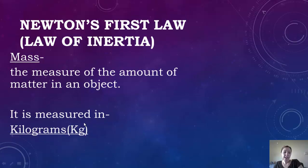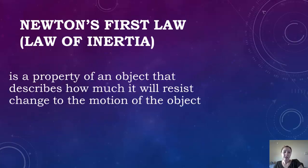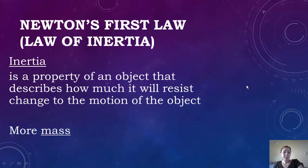Inertia can be described as a property of an object — basically, it's how much it will resist change. If you have more mass, then you're going to have more inertia. So what is this unbalanced force that acts on an object in motion? That can mainly be friction.